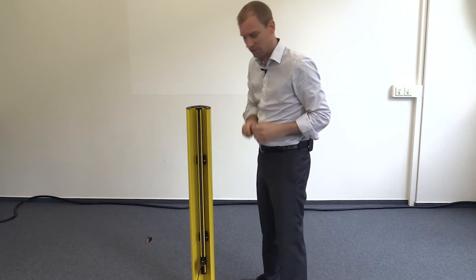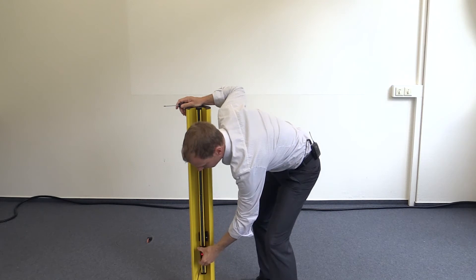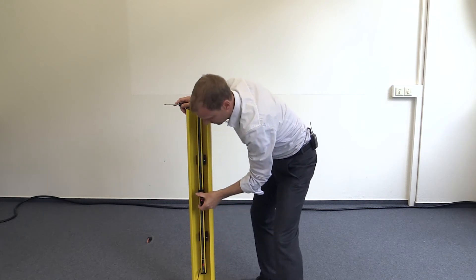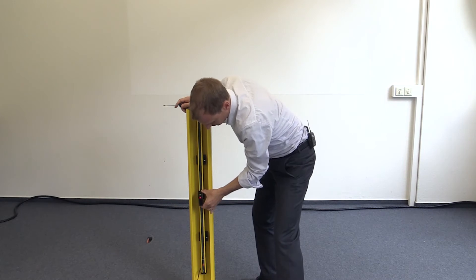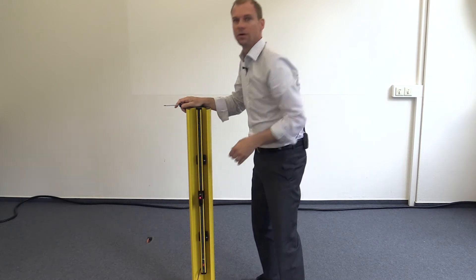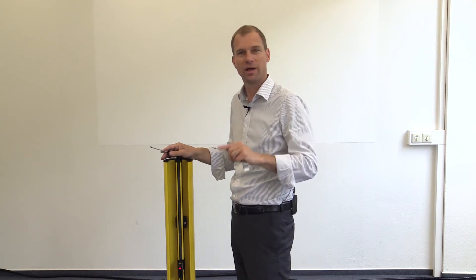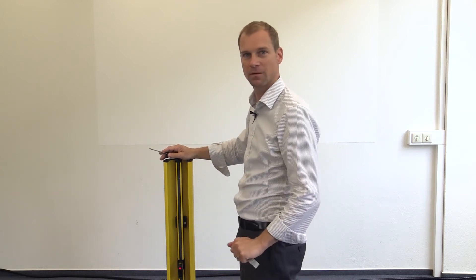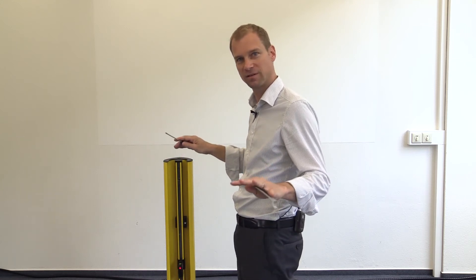We can continue with the second level. For this we move up the laser alignment aid and place it on the second beam. Now it is more or less the same procedure as we had it with the first beam. But we forget completely about the first beam now. We adjust the second beam.